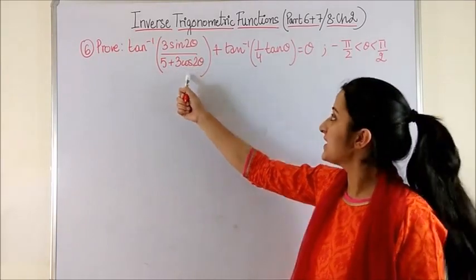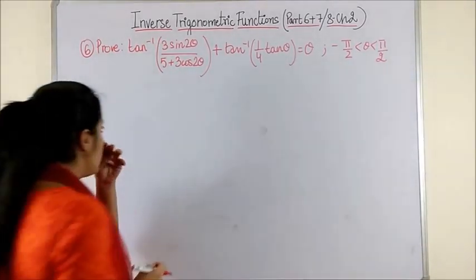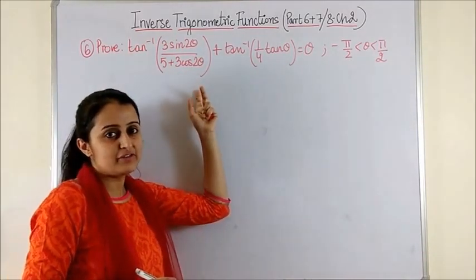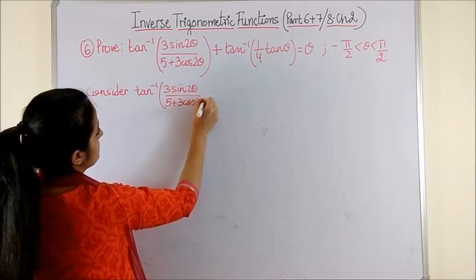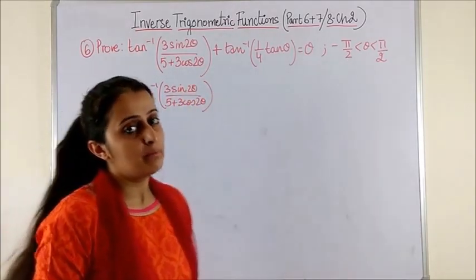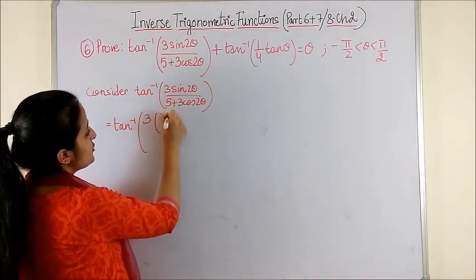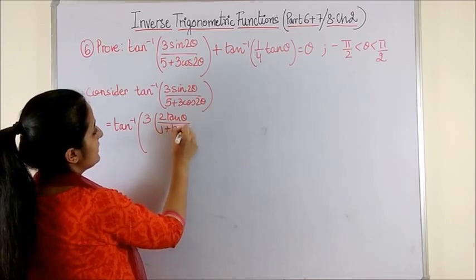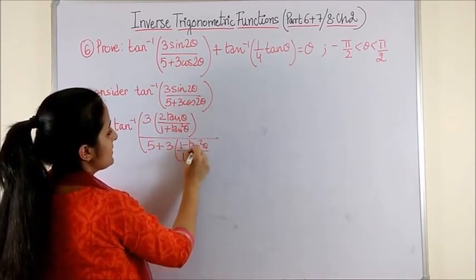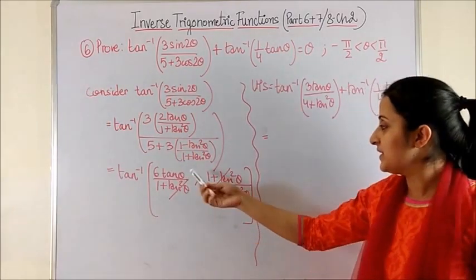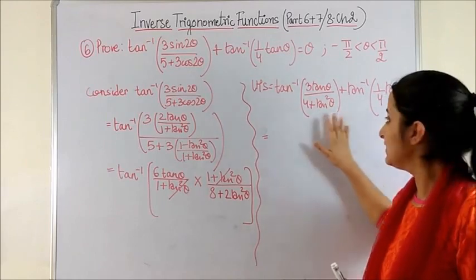Have a look at question 6. You have to prove that when these two expressions are added they give us θ. To simplify, consider the first term. Sine 2θ and cos 2θ can both be expressed in terms of tan. Writing it out, this becomes [2tan θ/(1 + tan²θ)] all upon [5 + 3·(1 − tan²θ)/(1 + tan²θ)]. Simplifying, we get 6tan θ/(8 + 2tan²θ), so the LHS becomes tan⁻¹[3tan θ/(4 + tan²θ)] + tan⁻¹(1/(4tan θ)).